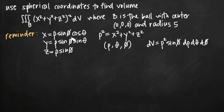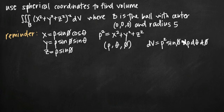As a reminder, I've written the conversion formulas we use to get from Cartesian coordinates in x, y, and z to spherical coordinates in rho, theta, and phi. We have four conversion formulas, and we also have a conversion formula for dV, which doesn't convert directly to d rho d theta d phi — we have to add a rho squared sine of phi component to convert from Cartesian to spherical coordinates.